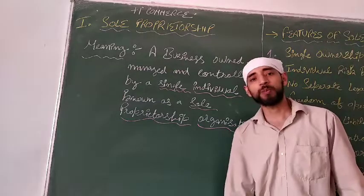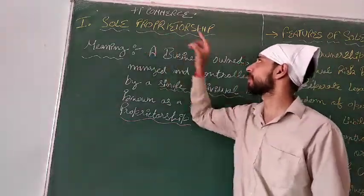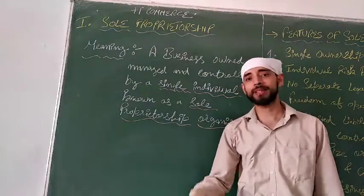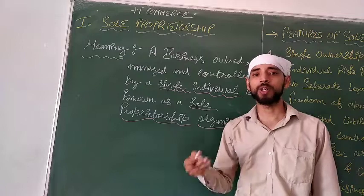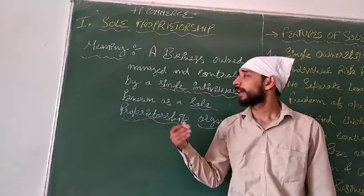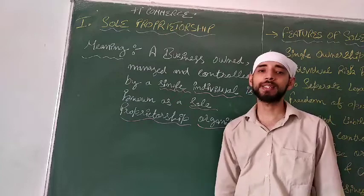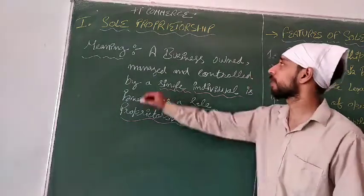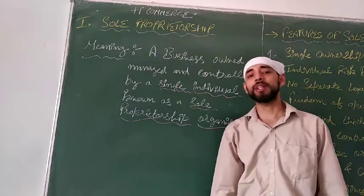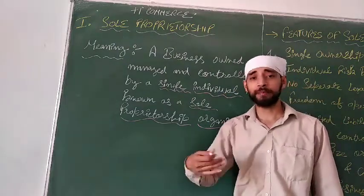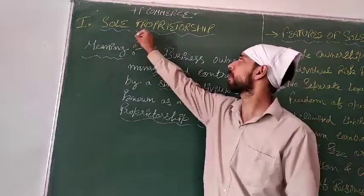The first option is to start a business. The forms available include sole proprietorship, partnership, joint-stock company, and others. When a new businessman starts a business, the first option is sole proprietorship.